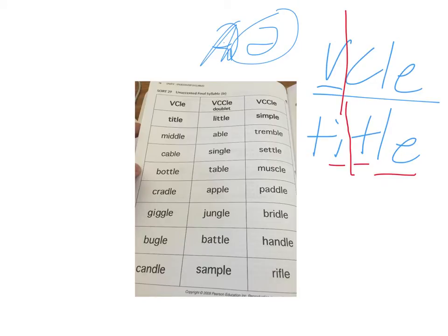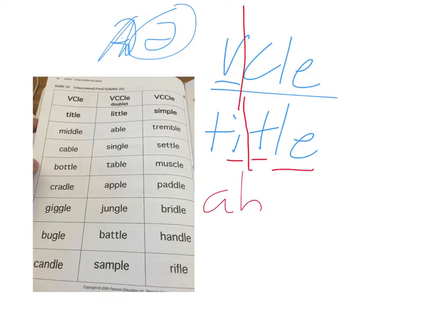Another one would be able. A-B-L-E. And in able, you have your vowel, your consonant, and then your L-E. Your syllable juncture would be right between the A and the B: A-bul.